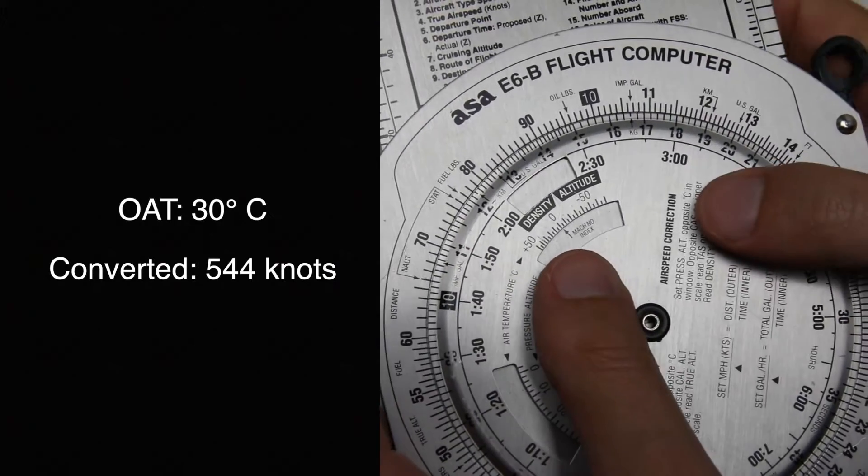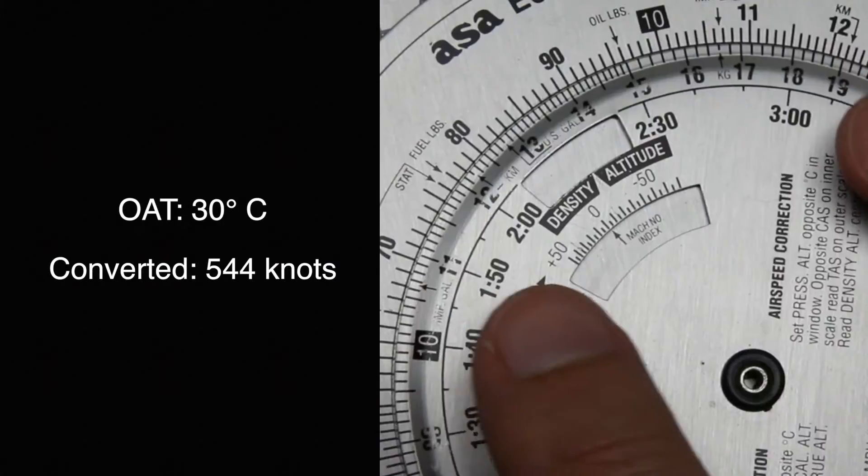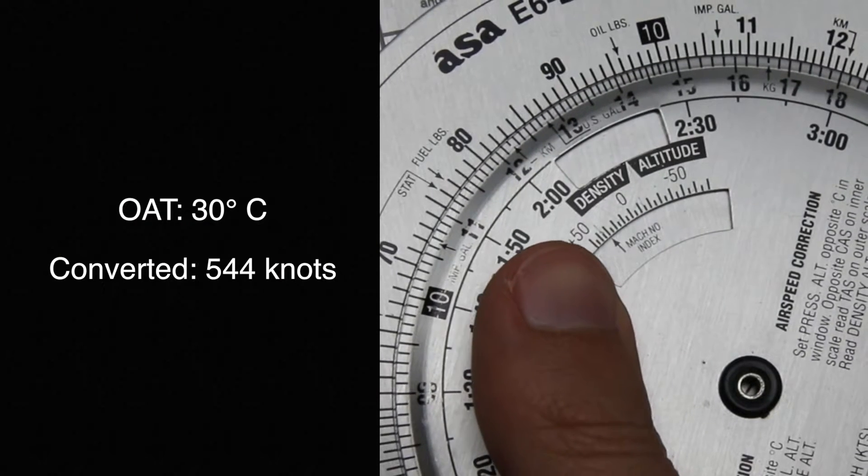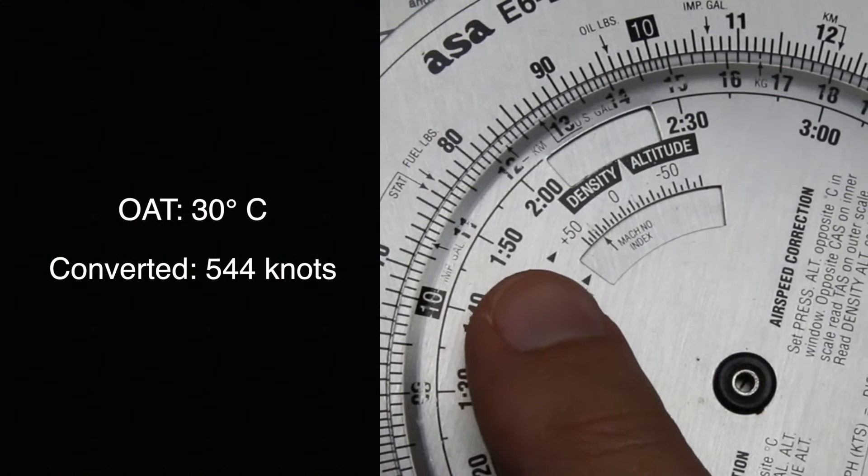So with the Mach index number, we're going to go ahead and set the outside air temperature, which in this case is going to be 30 degrees Celsius.